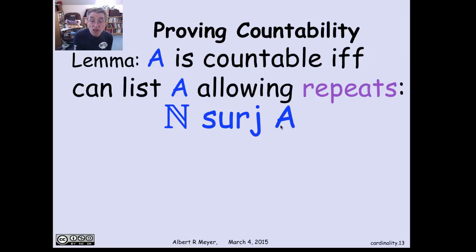If it's a finite set like 10 elements in A, map 0 through 9 to those 10 elements and map every other non-negative integer to the 10th element or last element of A. So there's certainly a surjection if A is finite. Now suppose that A is infinite and I have a surjection from the non-negative integers to A. So I'm listing A with repeats.